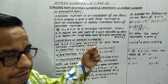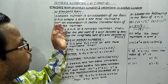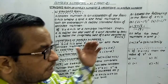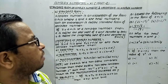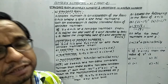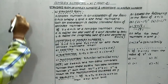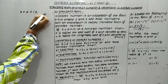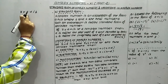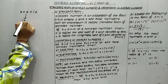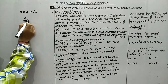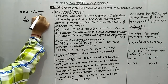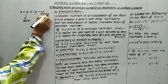A complex number is an expression of the form a plus ib, where a and b are real numbers. Such an expression is called the standard form of a complex number. If we denote z equals a plus ib, then a is called the real part of z, denoted Re(z), and b is known as the imaginary part of z, denoted Im(z).